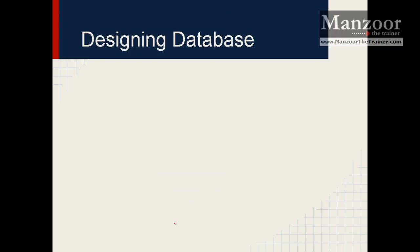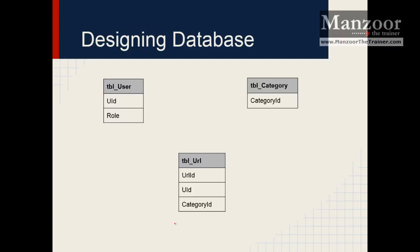Now following these rules, I can design the database. I have a user table, a category table, and a URL table. One user can upload many URLs, so user becomes the master and URL becomes the child — user id will act as a foreign key in the URL table. One category can have many URLs, so category becomes the master and URL becomes the child. That's it — this is my database design, which is very simple.